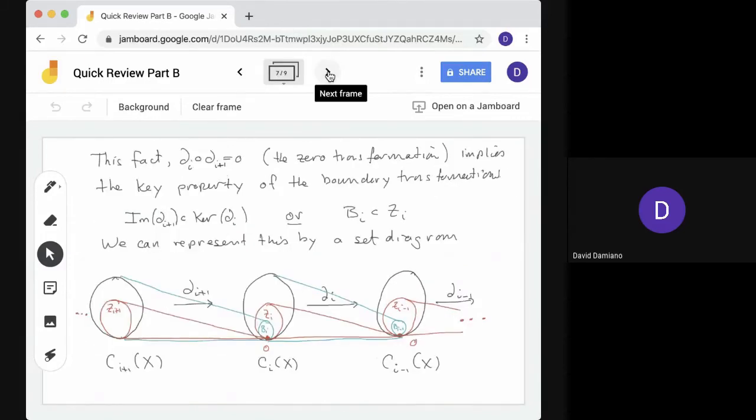So here's a different picture of that fact. And it's an important fact that the composition of boundary i+1 followed by boundary i is 0, and this means the 0 transformation and 0 on every chain. This gives us a key property. It says that the image of boundary i+1, that's the output of boundary i+1, when we feed it into boundary i, we get 0. So it's in the kernel of boundary i. Or we could say that capital Bi is contained in Zi.